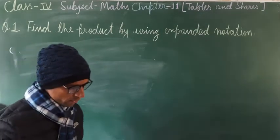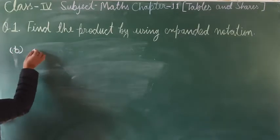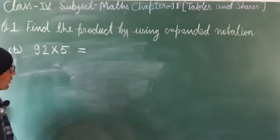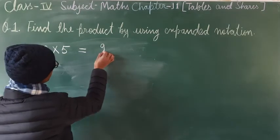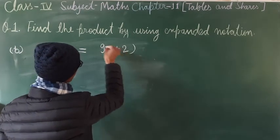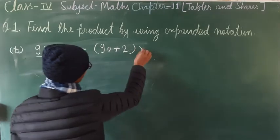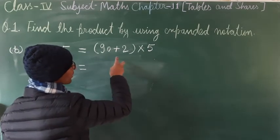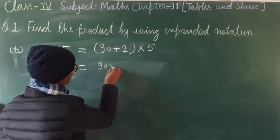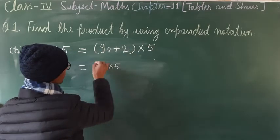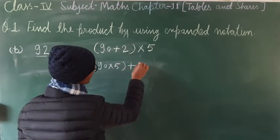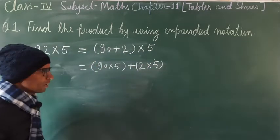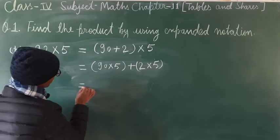Part B: 92 × 5. Again write in expanded notation. 92 means 90 + 2, so write (90 + 2) × 5. Next step: multiply the first number with 5 — 90 × 5 — then plus 2 × 5.